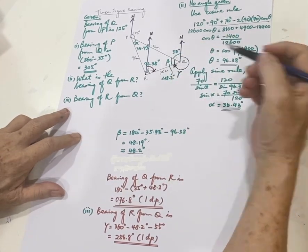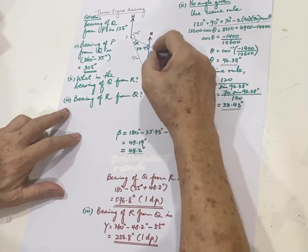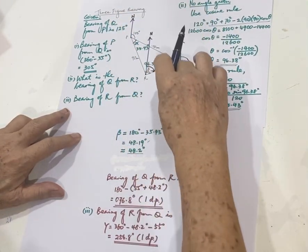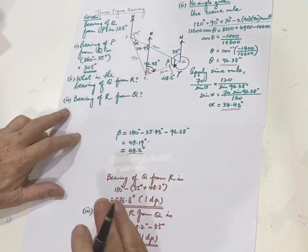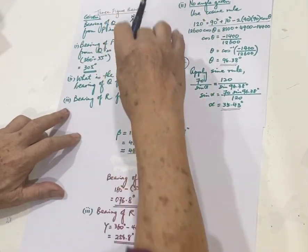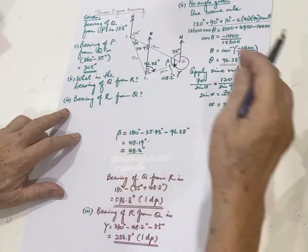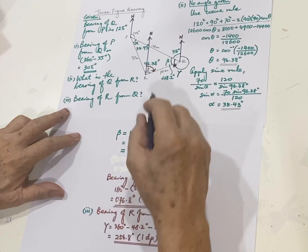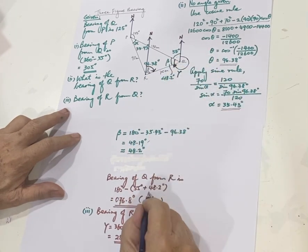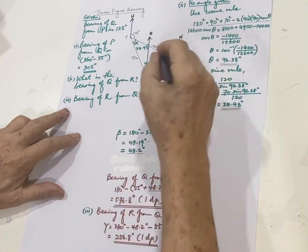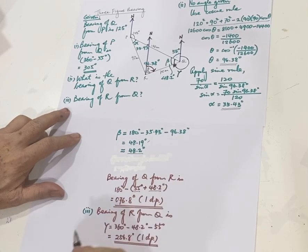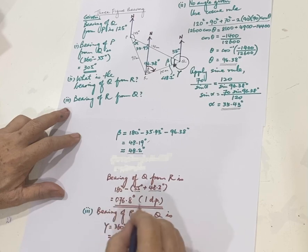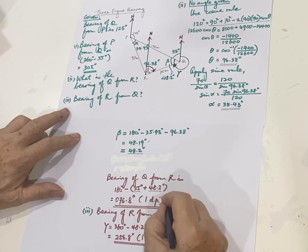So if you want that angle, beta is 48.2. Always good to write it there. This angle is 55. So again, parallel lines. So keep drawing the north points. So point to the north. All these northern signs, they are all parallel. Please remember that, okay? So the bearing of Q from R will be 180 minus beta, which is 48.2, minus 55, which we got earlier. So it gives me 76.8 degrees to one decimal place.